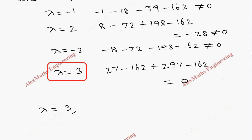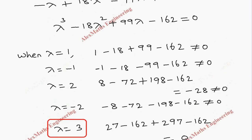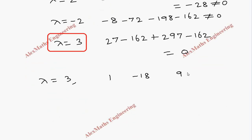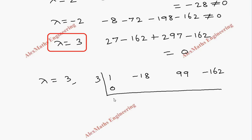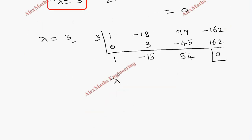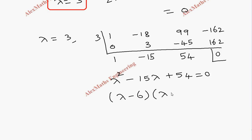Taking all the coefficients: 1, minus 18, 99, and minus 162. Using the root 3 in synthetic division: bring down 1; 3 times 1 gives 3, so minus 18 plus 3 gives minus 15; 3 times minus 15 gives minus 45, so 99 minus 45 gives 54; 54 times 3 is 162, so minus 162 plus 162 gives 0. The remaining expression is lambda squared minus 15 lambda plus 54 = 0. Product is 54, sum is minus 15, so factors are (lambda minus 6)(lambda minus 9).